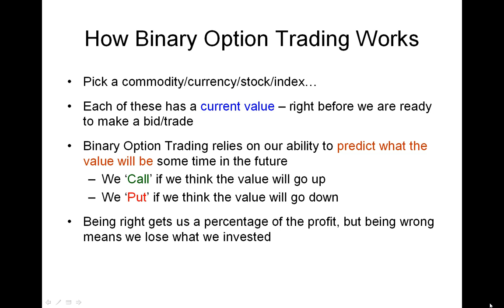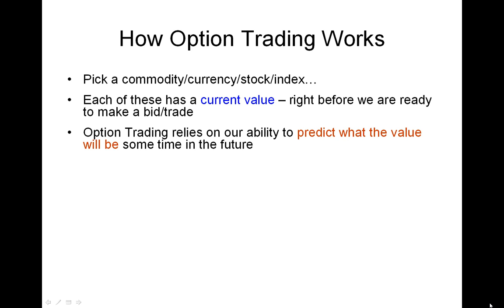Being right earns us a profit — a profit in terms of a percentage of what we invested — but being wrong means we lose all of what we put in. Moving on to option trading, let's start by underscoring the similarities between binary option trading and option trading. Essentially, we start by doing the exact same thing: we pick a commodity, currency, stock, or index. It has a current value right now, and again, option trading relies on our ability to predict what the value of that asset is going to be sometime in the future.